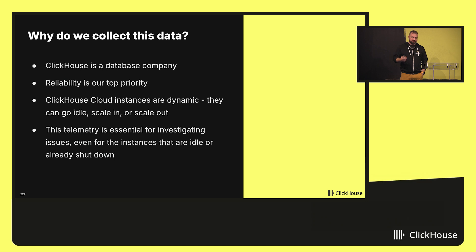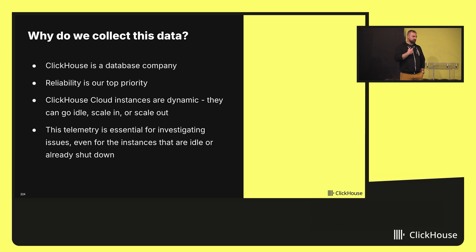So why do we need this? Well, we're a database company — reliability is paramount. No one would be happy to use a database that isn't reliable. This telemetry is essential for debugging incidents in retrospective, and making the experience better for our customers. We need to have a history, because ClickHouse Cloud is a dynamic environment. Instances are, in a sense, ephemeral — the compute layer is detached from storage. Instances can go idle, stop, be running, scale in, scale out — and we need this historical data. We can't just connect to the instance itself and get the data from it.